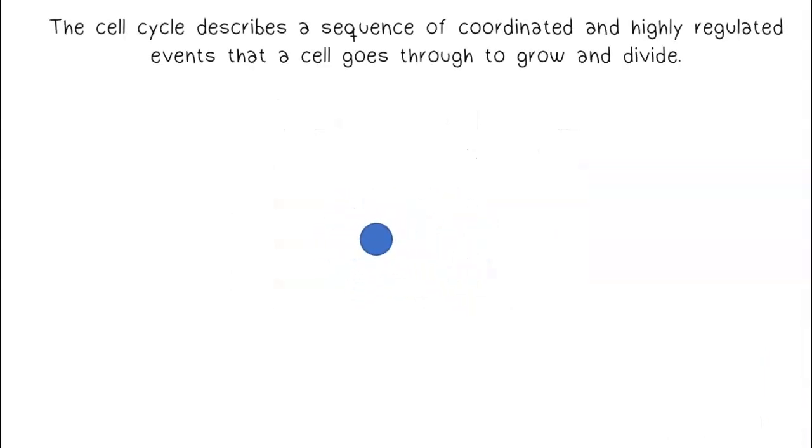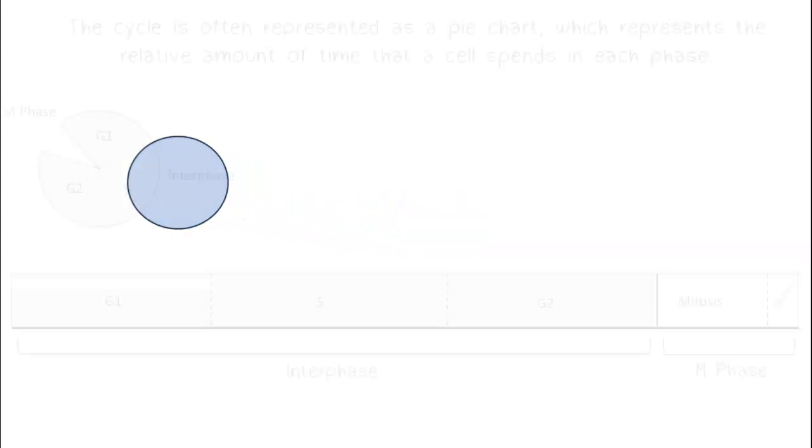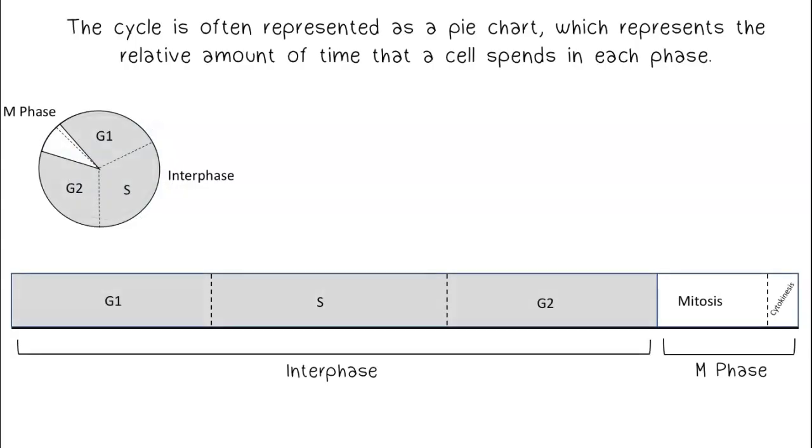The cell cycle describes a sequence of coordinated and highly regulated events that a cell goes through to grow and divide. The cycle is often represented as a pie chart, which represents the relative amount of time that a cell spends in each phase.